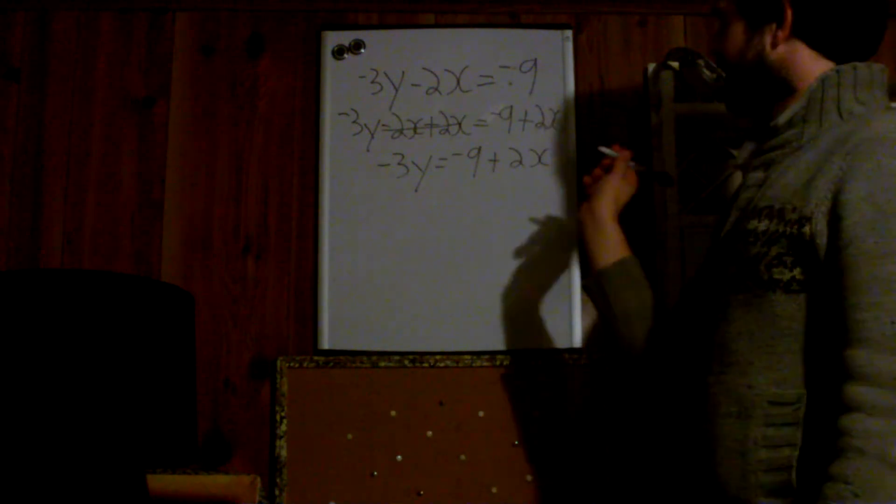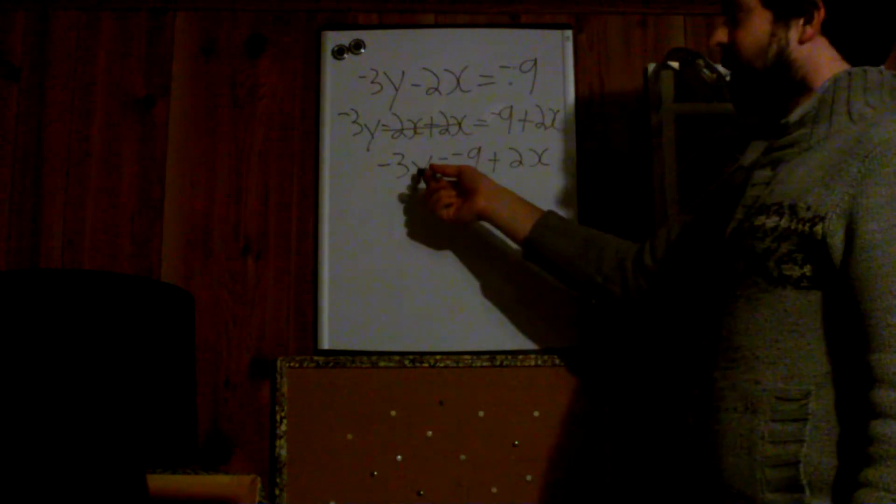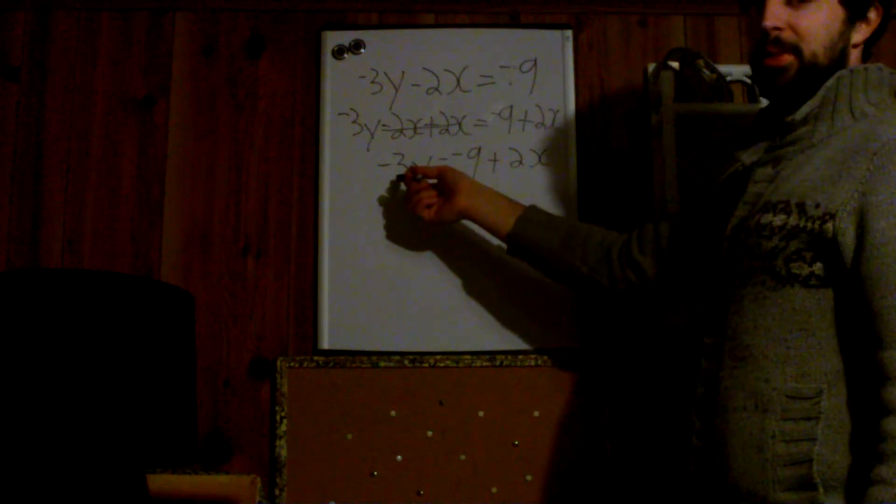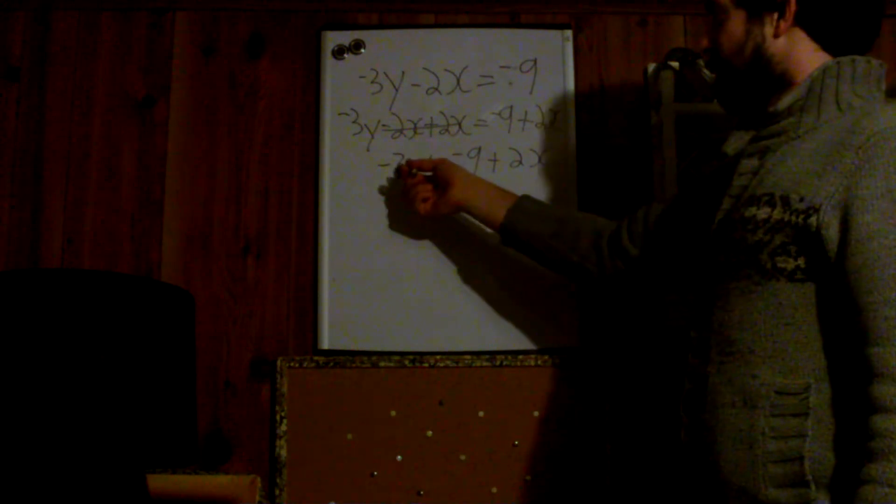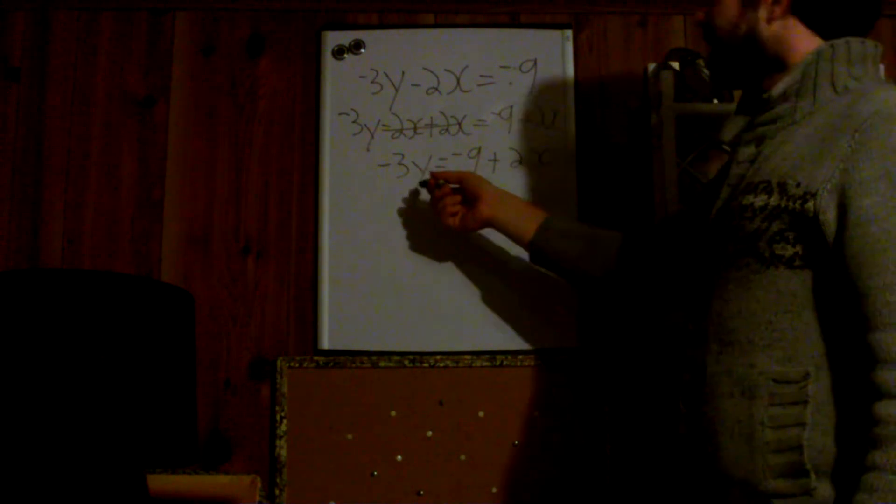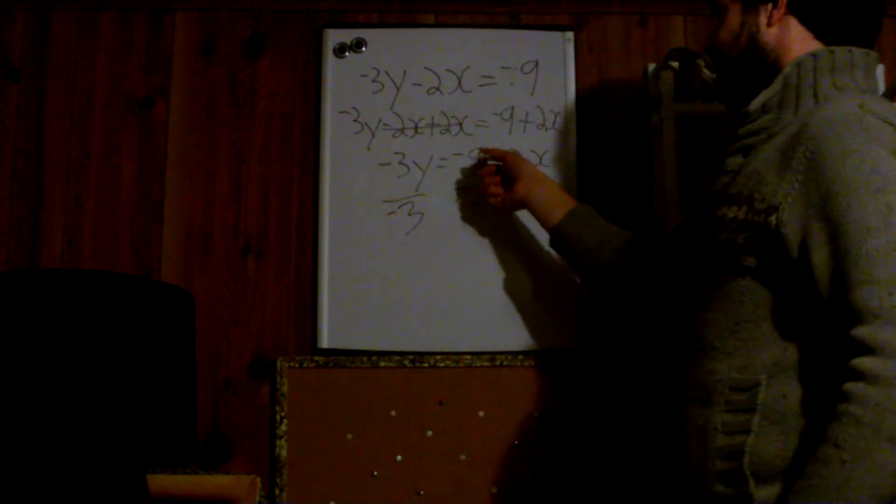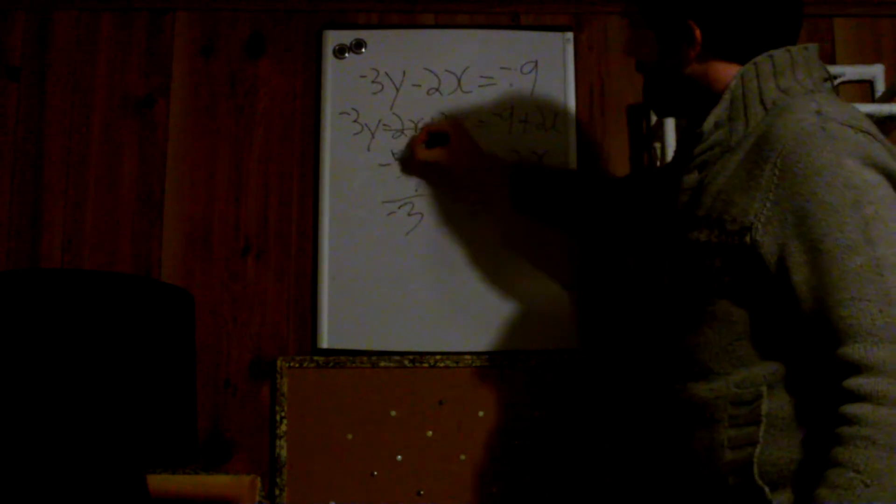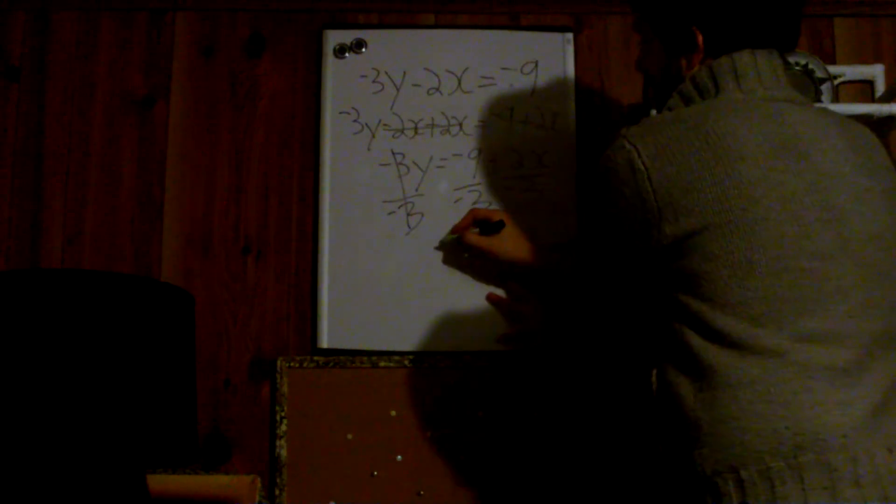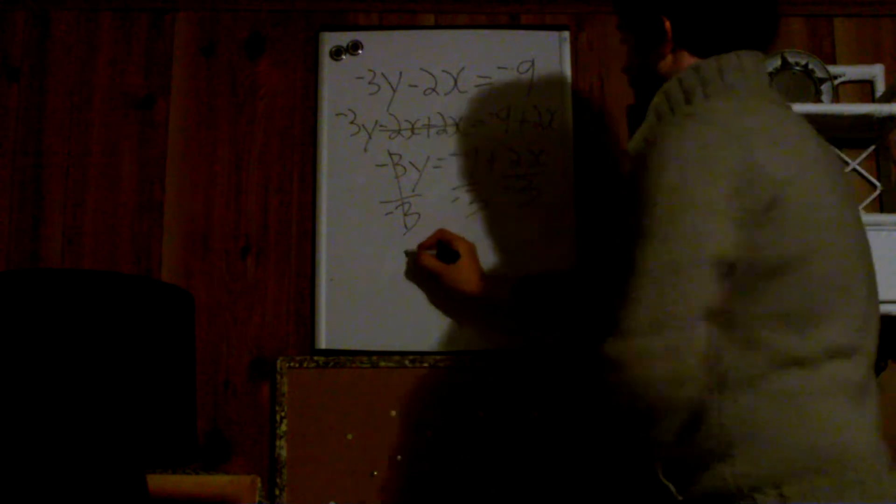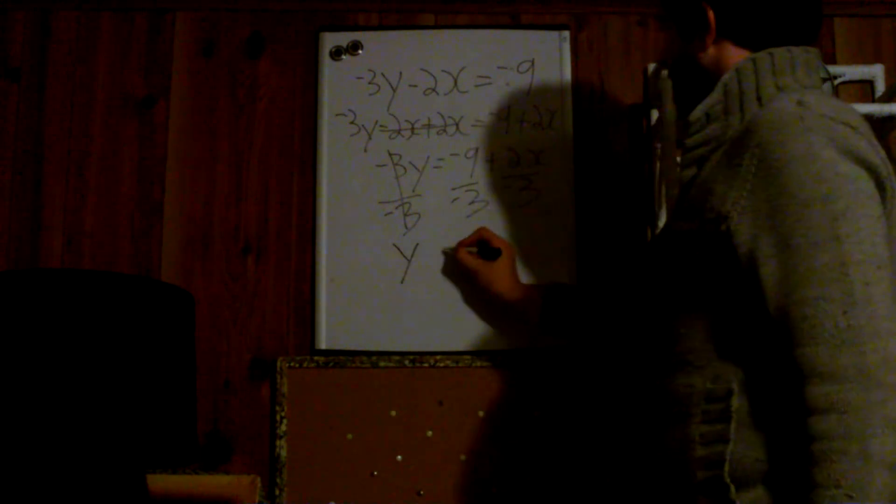Now what do we got to get rid of? Well, we only want y over here. We got to get rid of that negative 3. When a number is being multiplied by a variable, we have to divide by that number to get rid of it. And if we divide on one side, we have to divide everything on the other side by the same number. So negative 3s cancel. My whiteboard almost falls down. And we're left with y.